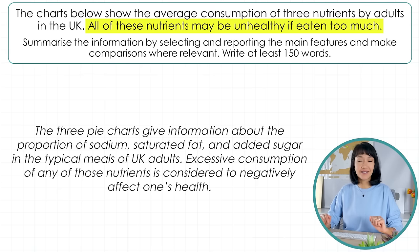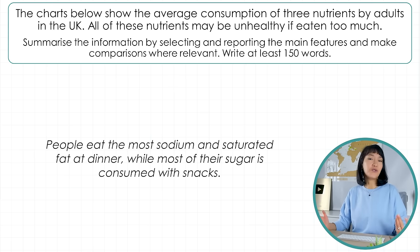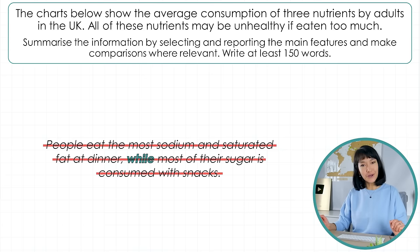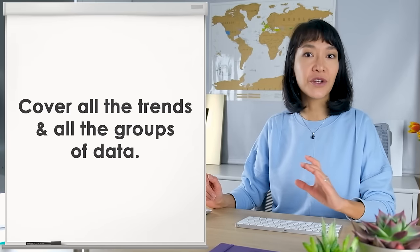In your next sentence, write an overview. A lot of students have heard that they need it, but here is a very common problem. Consider this overview: 'People eat the most sodium and saturated fat at dinner, while most of their sugar is consumed with snacks.' It's a beautiful complex sentence with a great linker — but it's not a good overview. Why? Because where is breakfast? Where is lunch? You should cover all the trends and all the groups of data.